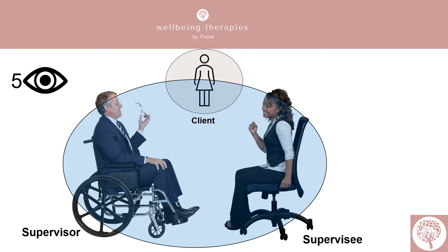The fifth eye of supervision focuses on the therapist and supervisor relationship. What happens in the counselling room can often play out between the supervisor and the therapist — the therapist acts like the client, and the supervisor takes on the role of the therapist. Does the therapist resist support or advice? Do they respond negatively to any challenges the supervisor might make? This can give you insight into how the therapist interacts with the client.